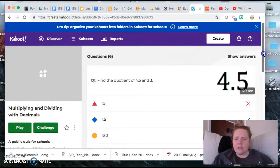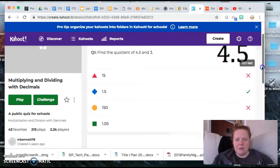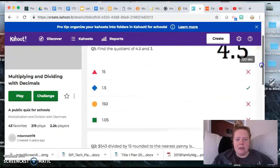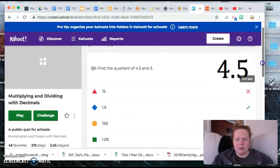And so one of the questions that pops up is find the quotient of 4.5 and 3. Once they do that, they would click on an answer. So it already gave the correct response here.